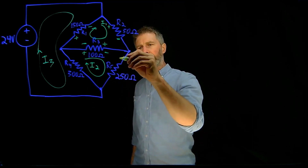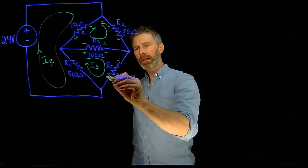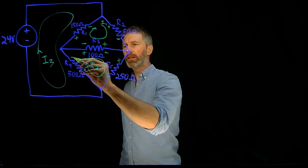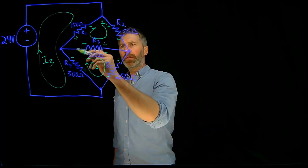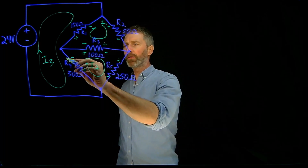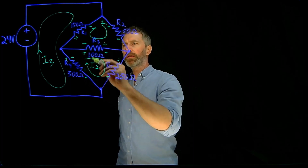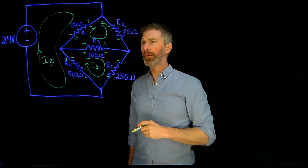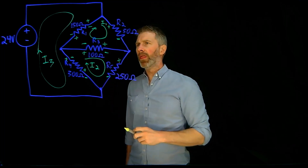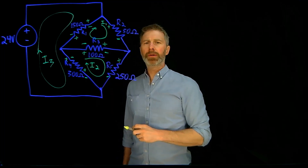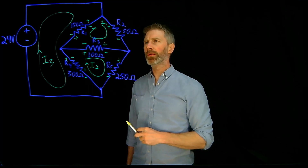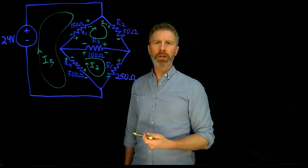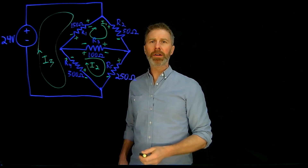For R5, the current's going that direction, so it'll be positive on that side and negative on that side, and for R4 that direction, so positive on that side, negative on that side. For current number three, we'll have positive and negative for R4, and positive and negative for R1. You'll notice that each one of the resistors that has two of our defined currents going through it, the polarities are opposite. Note there's really only one total current going through each resistor — this is just part of the mesh current analysis method.